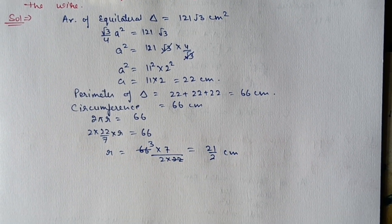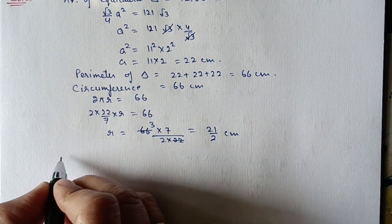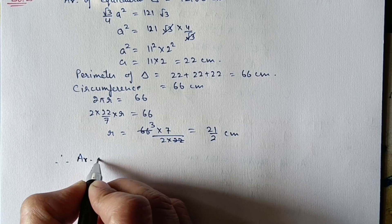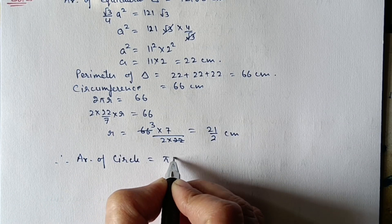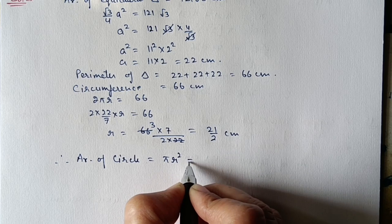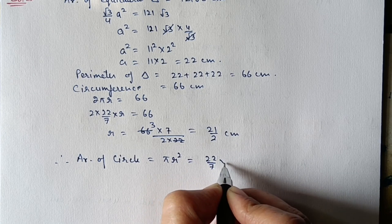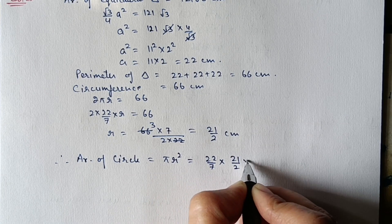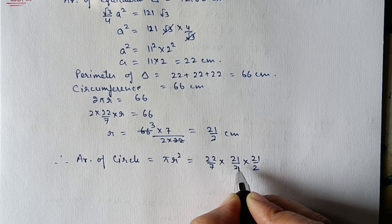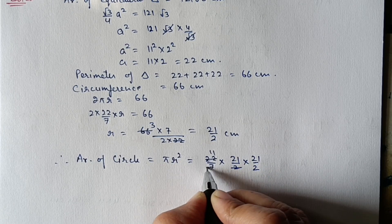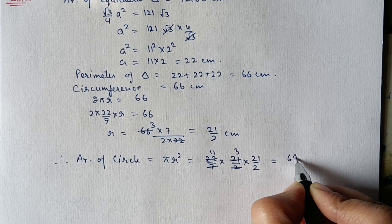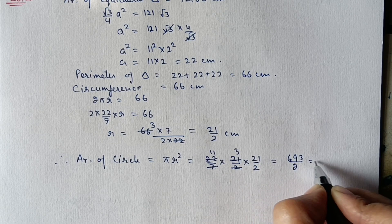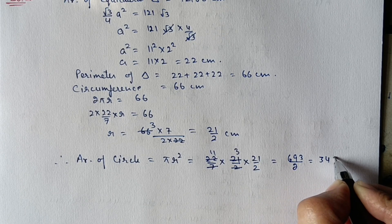Now we have to find the area of the circle. Area = πr² = 22/7 × (21/2) × (21/2). The 7 and 2 cancel out after multiplication, giving 693 upon 2, or 346.5 centimeter square.